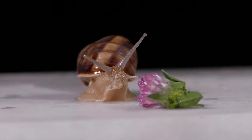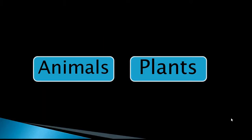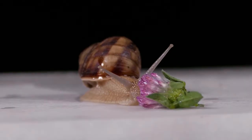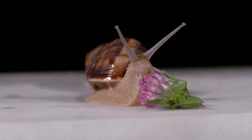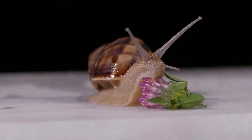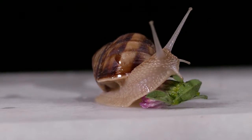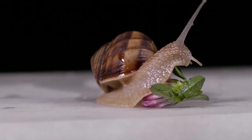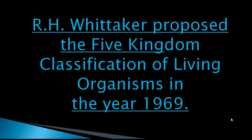Whittaker's five kingdom classification of living organisms. In the early years of biology, living organisms were broadly divided into two categories: animals and plants. These two divisions were limited for studying living beings, so after extensive research, the American biologist R.H. Whittaker brought a revolution in the field of classification of living organisms.